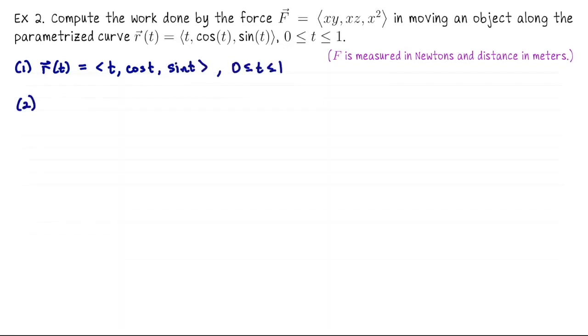Next we need to evaluate our vector field on this curve. So F(r(t)) will be the x coordinate times the y coordinate, so that's going to be t cos t, x times z is t sin t, and then x² is t².